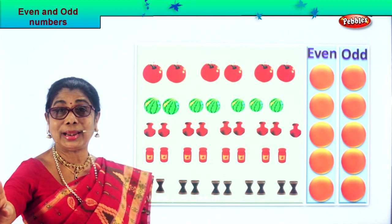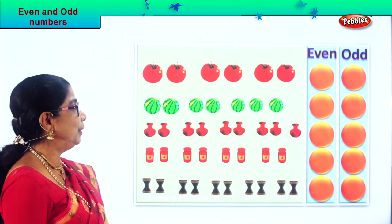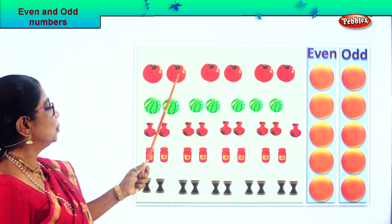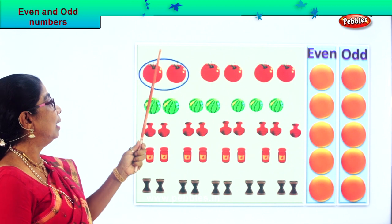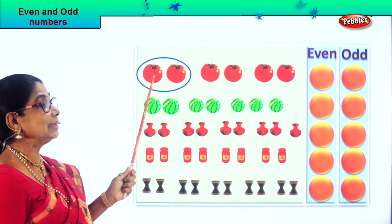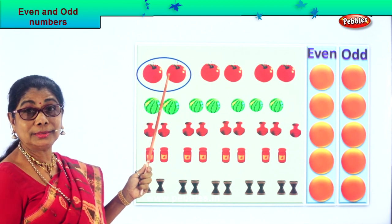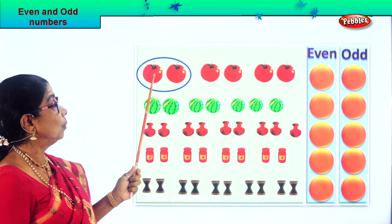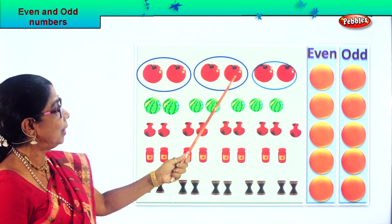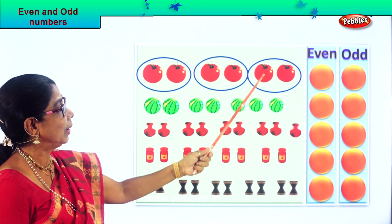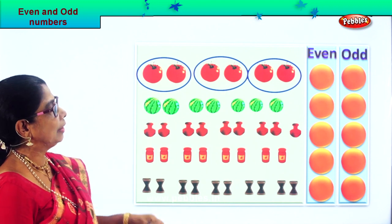Let's take the first one — I am sure you are going to enjoy the exercise. Count one, two, and put a circle around them. They are both partners. Continue: one, two — circle; one, two — circle; one, two — circle. Now there is no tomato left.